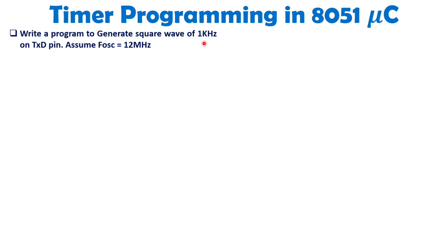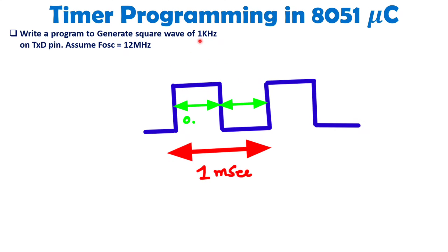A square wave of 1 kHz has a total time period of 1 divided by 1 kHz, which equals 1 millisecond. For half a millisecond the wave should be positive, and for the other half millisecond the wave should be negative. Based on that half-millisecond period, we need to load the count value and then complement the TXD pin.